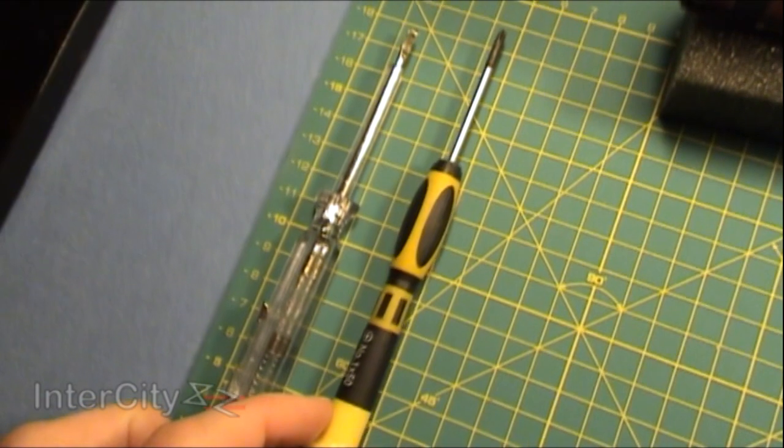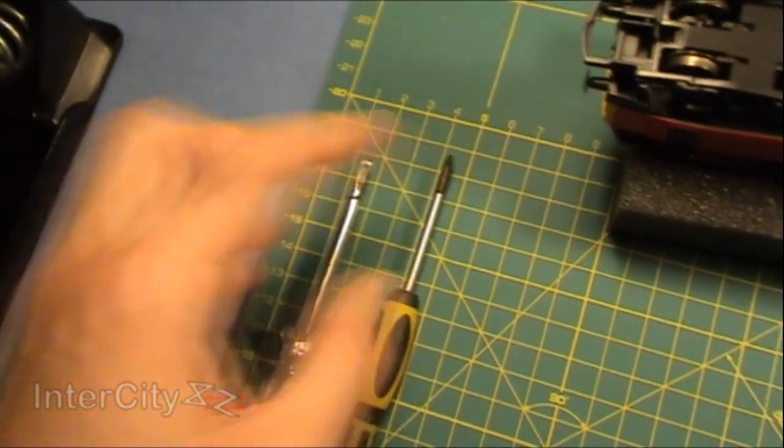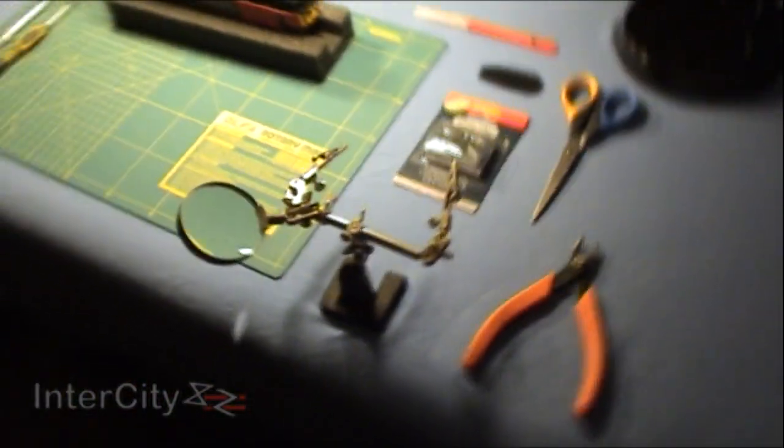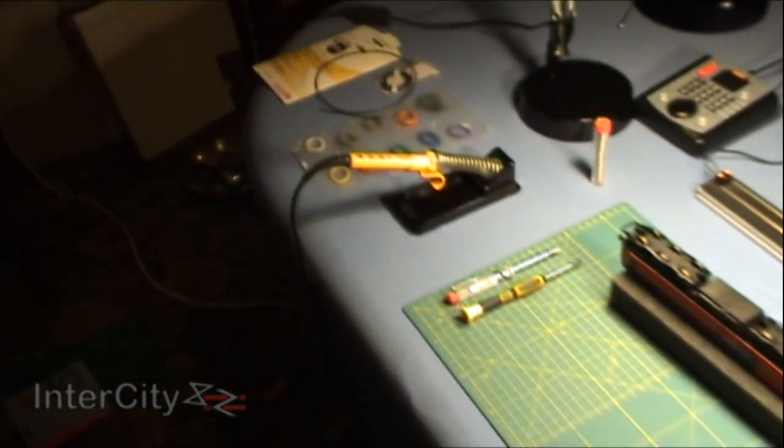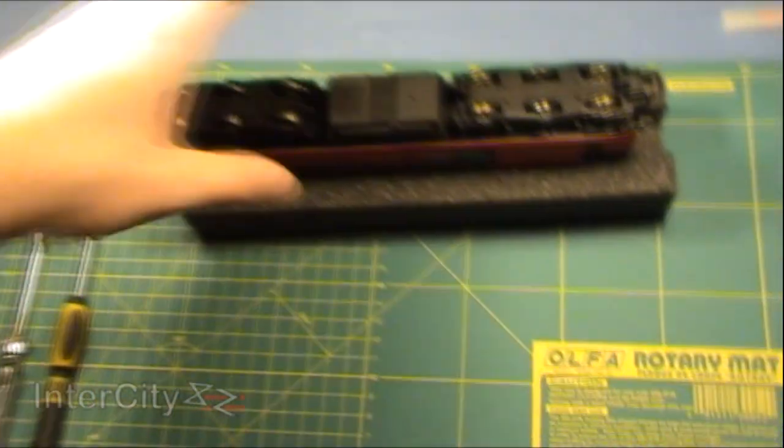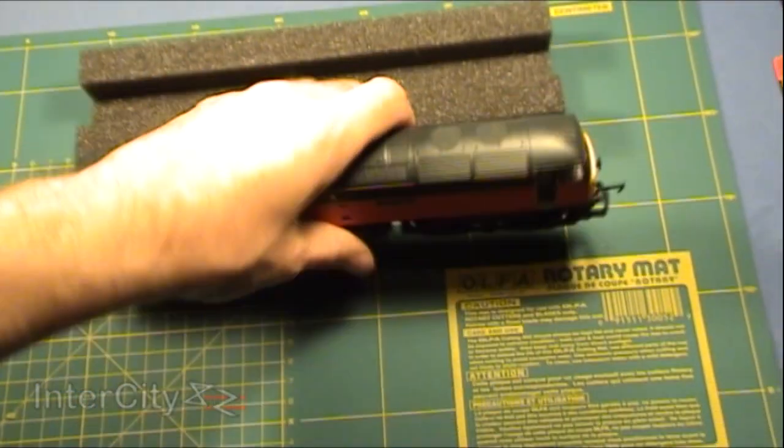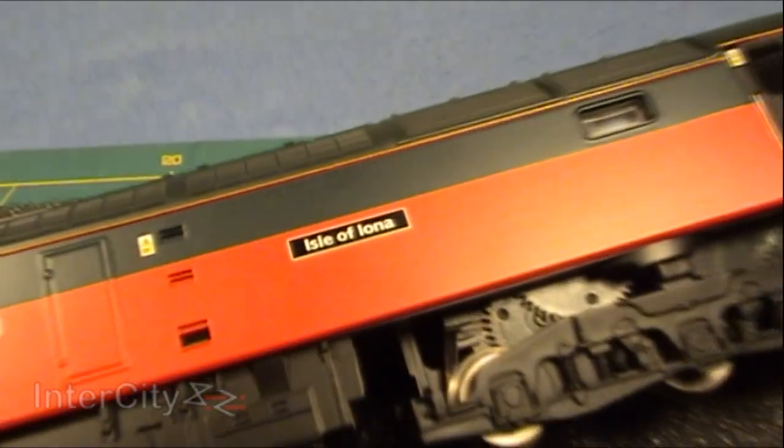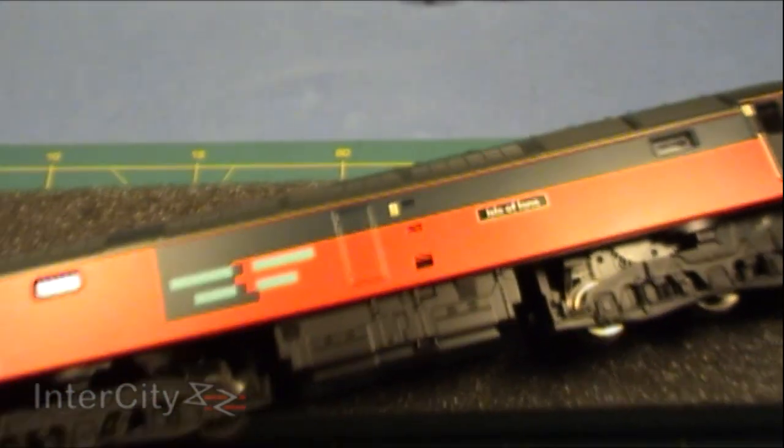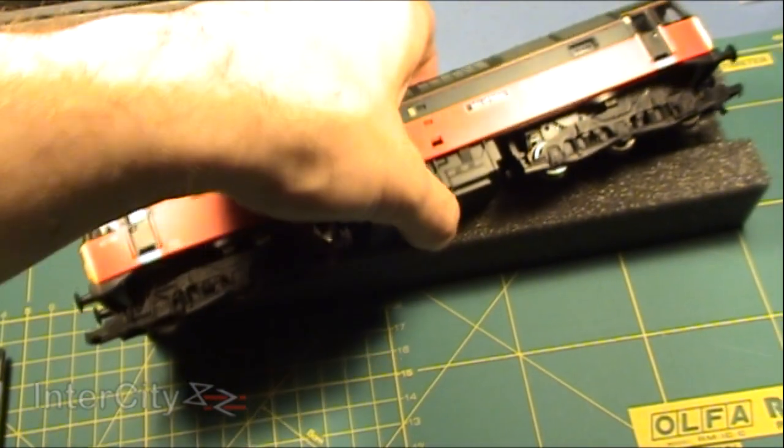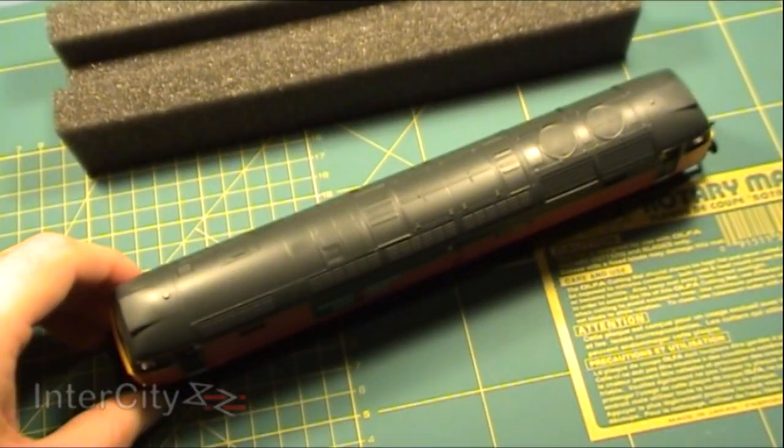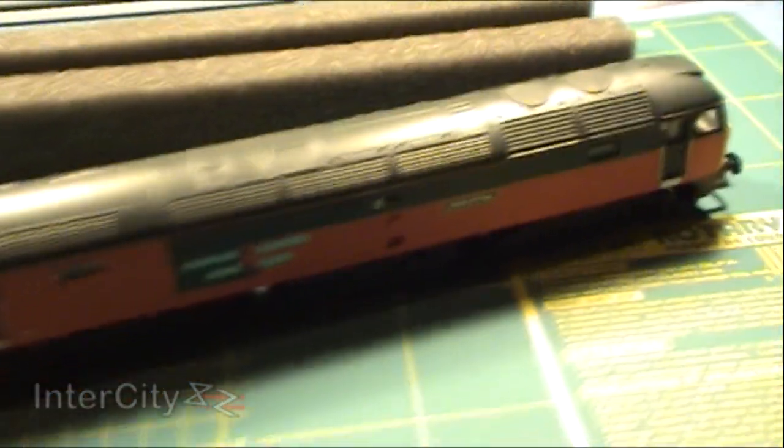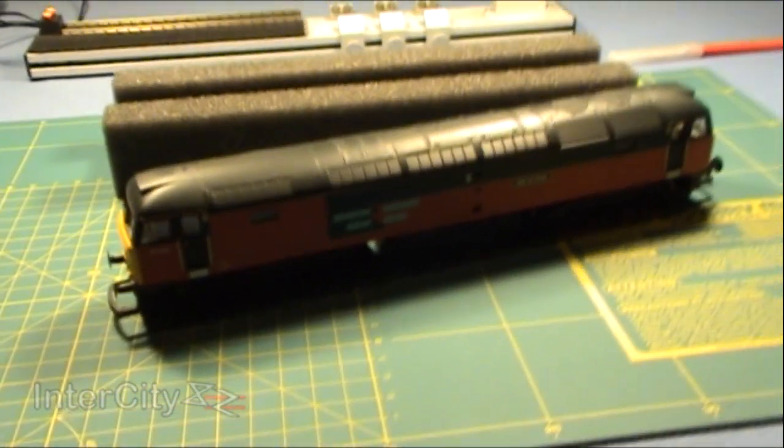Then there's a pair of precision screwdrivers—a Phillips crosshead and a flat one. That's basically all the equipment you need to DCC a non-DCC ready locomotive. What locomotive are we chipping? Let me show you. She's the Isle of Iona, a Class 47 by Hornby. Nothing particularly special—she came in the Serco Rail test set. But she's a non-DCC ready locomotive, so we're going to chip her.